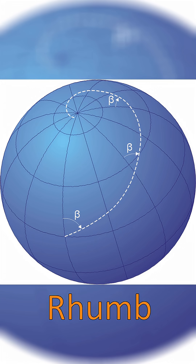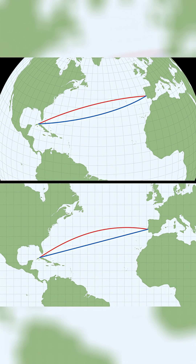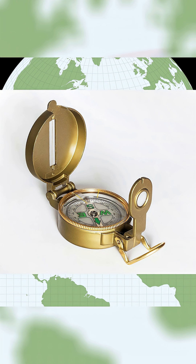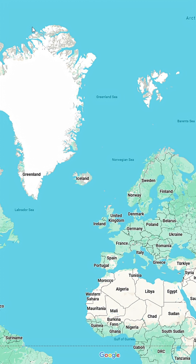This is because a rhumb line, which is a curved line that maintains a consistent angle, appears straight on the Mercator Projection. This is helpful in marine navigation because you can draw a straight line between two points, and that will be the angle you have to set your compass to follow. The Mercator Projection is also the primary projection used on websites such as Google Maps, OpenStreetMaps, and other websites.